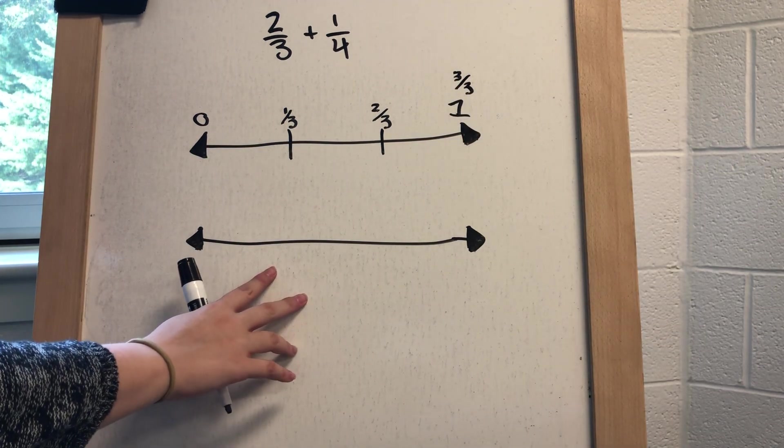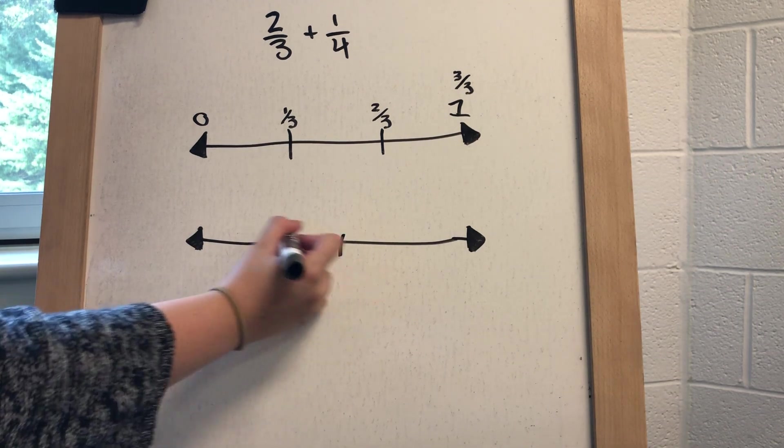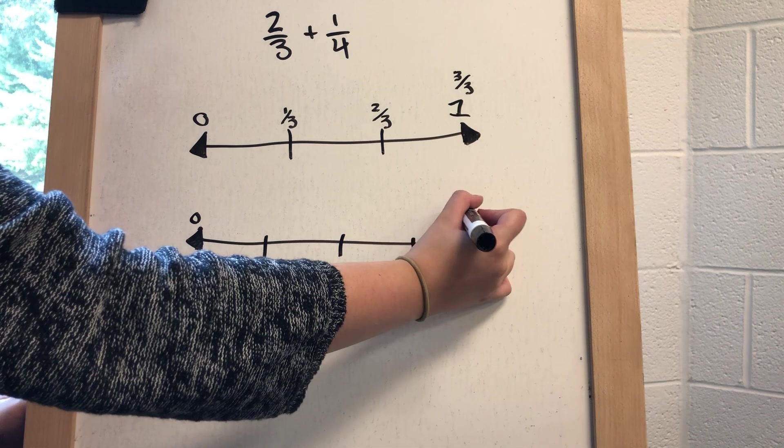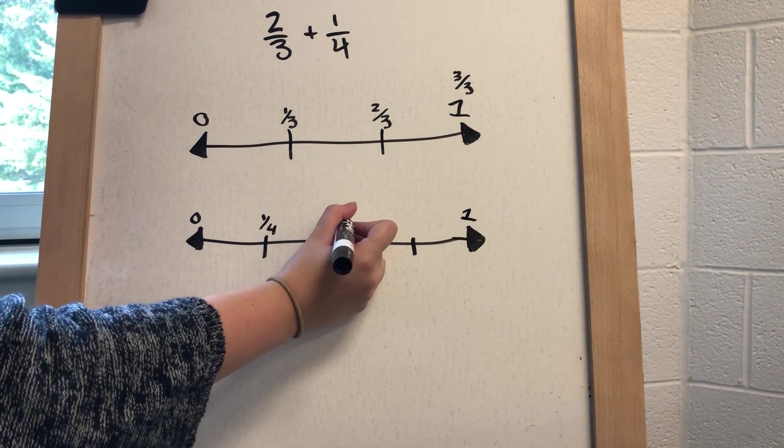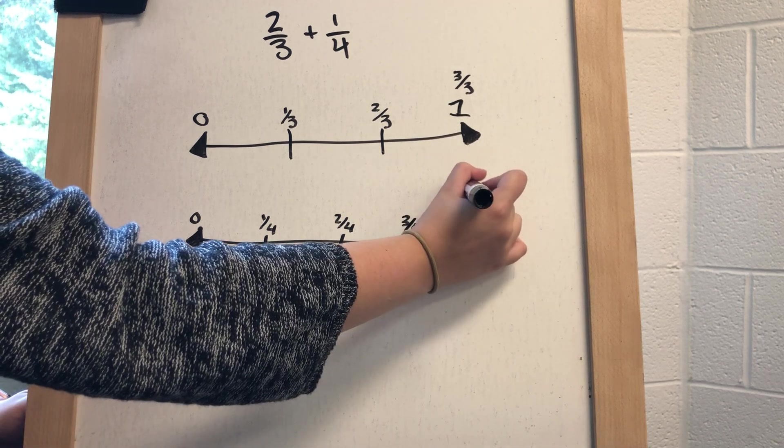Then on my bottom number line, I'm going to show the one-fourth by splitting my number line into fourths. Again, this is zero and one. This is one-fourth, two-fourths, three-fourths, and four-fourths.